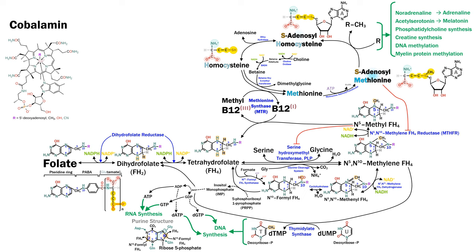Dimethylglycine has its last two methyl groups stripped off, giving methylglycine — or sarcosine — and then glycine. Glycine actually functions as a methyl recipient in the case of excessive SAM, where it's converted back to sarcosine. This betaine pathway mostly takes place in the liver, and importantly does not take place in the central nervous system.